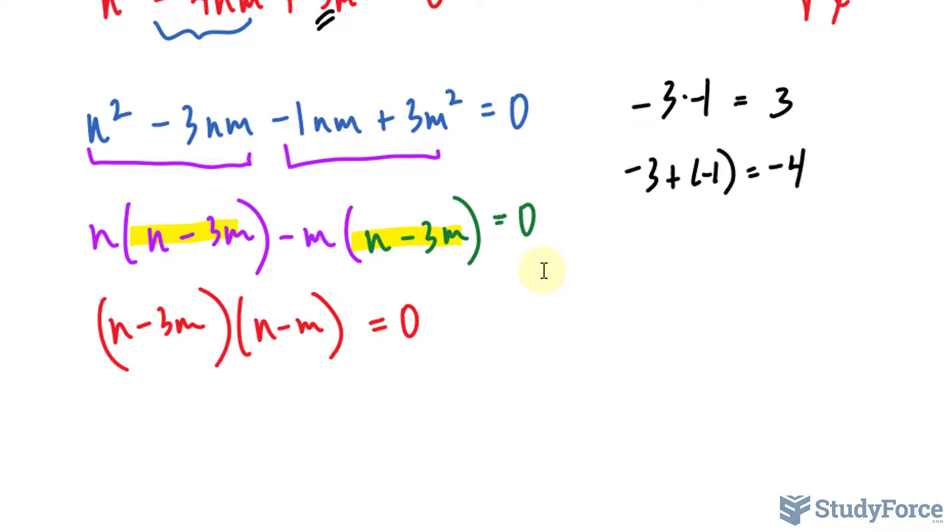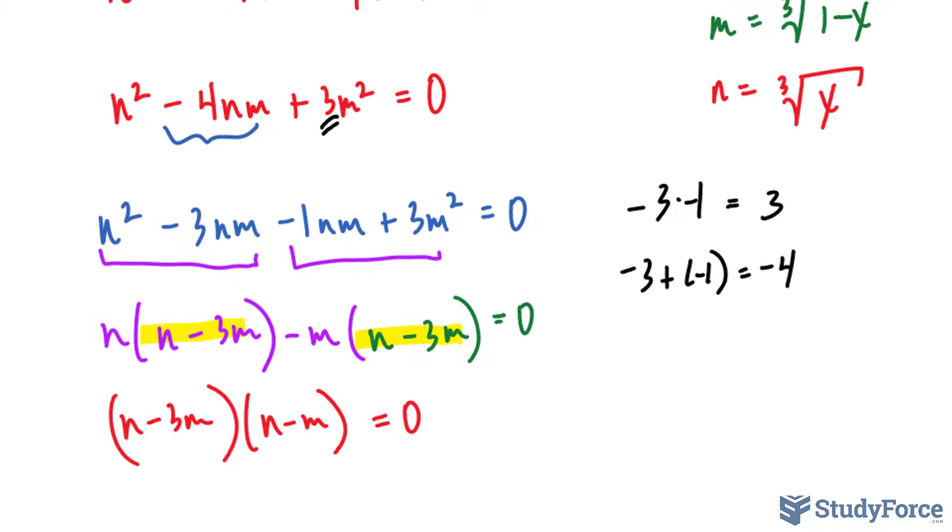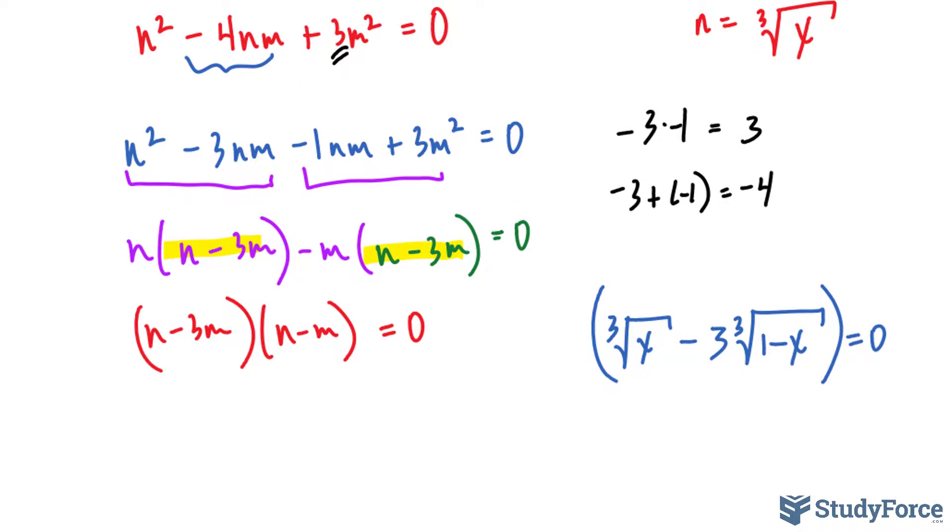Now, if we replace back what n and m is into this equation that's in red, we can actually solve for x. Let me show you what I mean. So I'm going to replace this n and that n with what they actually are, which is the cube root of x, minus 3 times m, which is that expression, and that's the first group. We will set that equal to 0. Then we'll worry about the second factor and set that equal to 0 individually. Let's go ahead and solve for x.